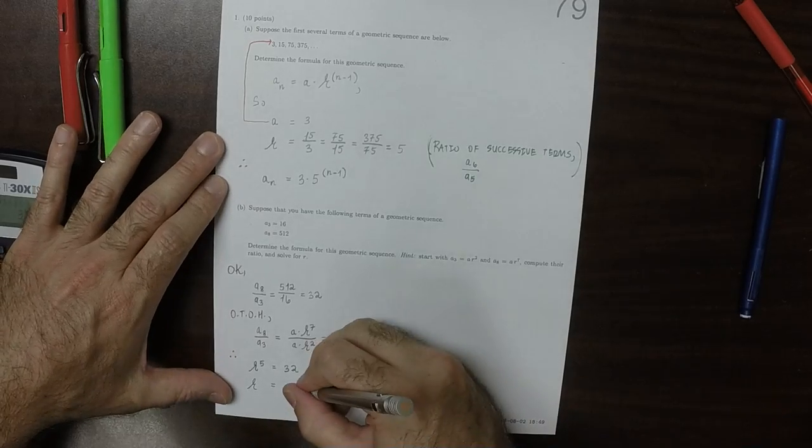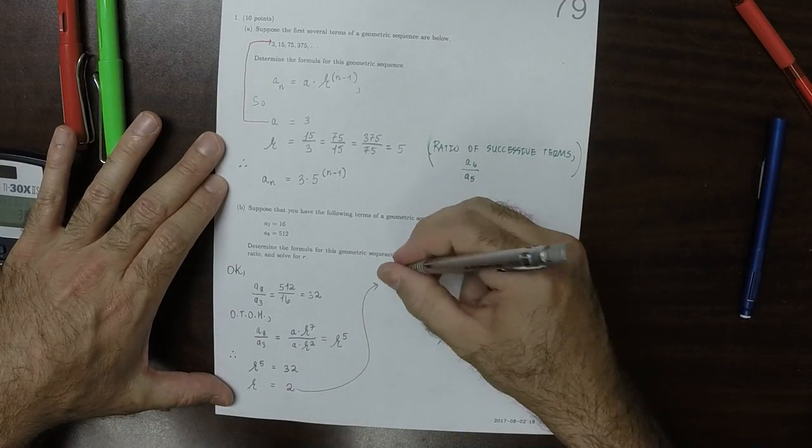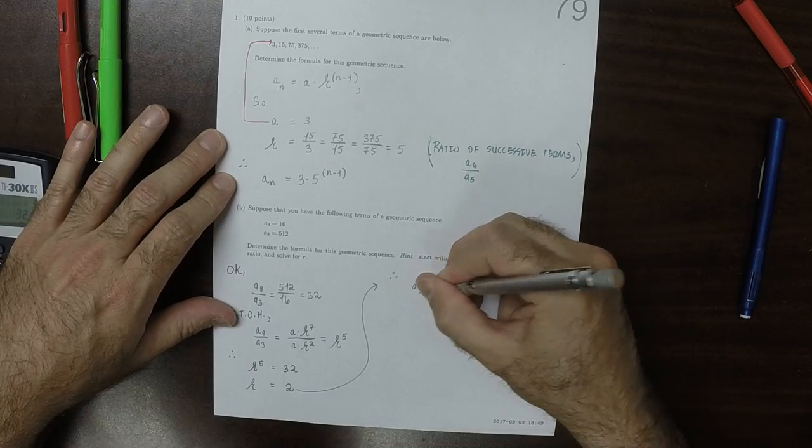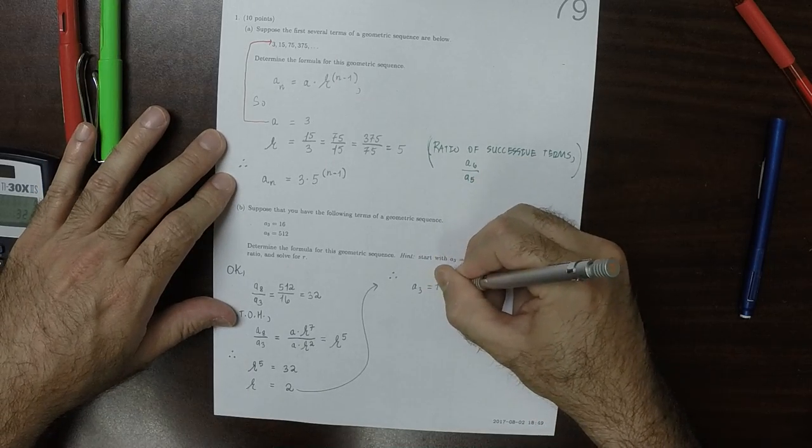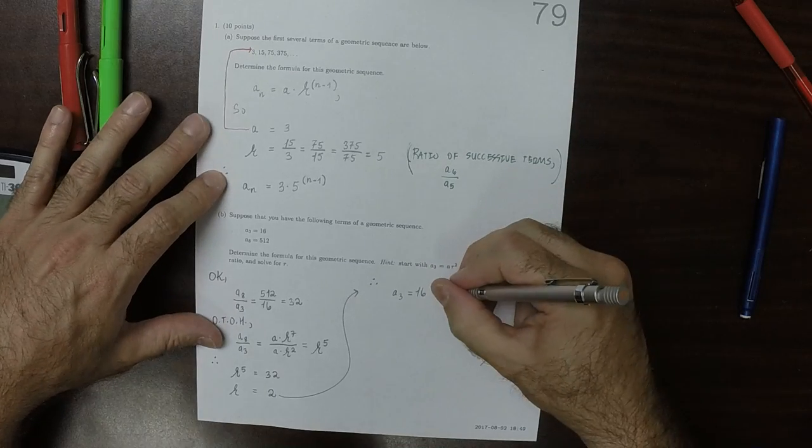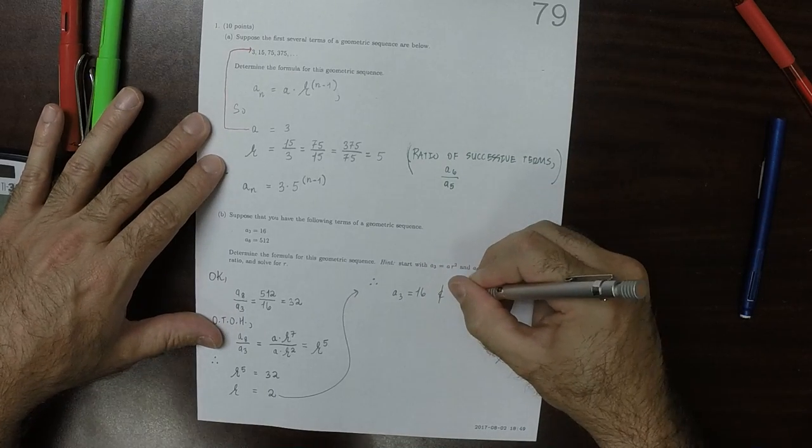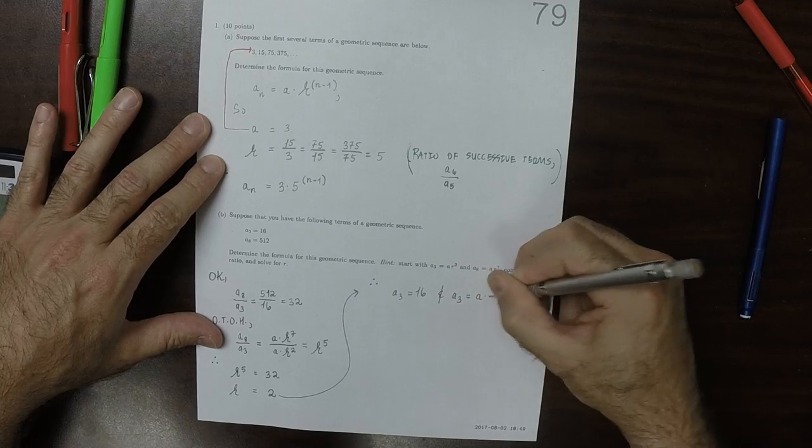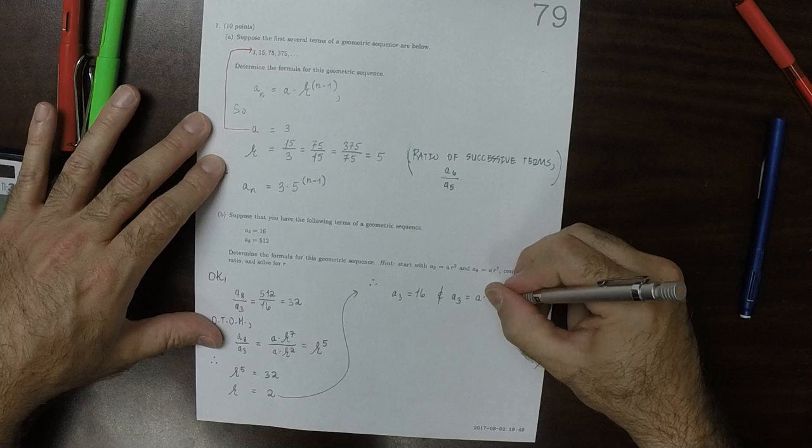So as a result of that, we know that on the one hand a_3 is 16, and on the other hand a_3 must be equal to some a multiplied by 2 squared.